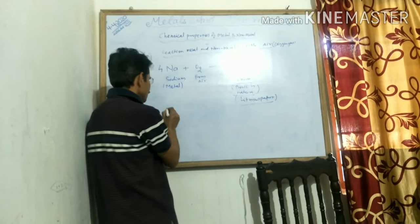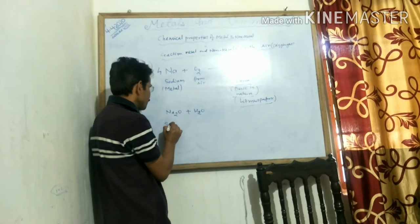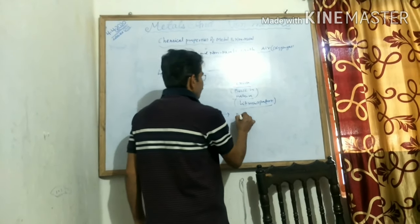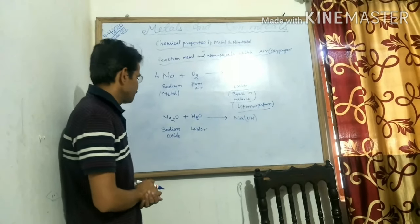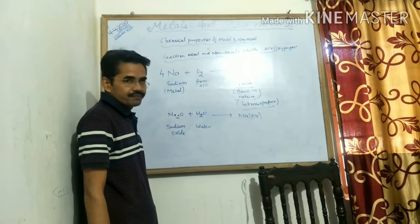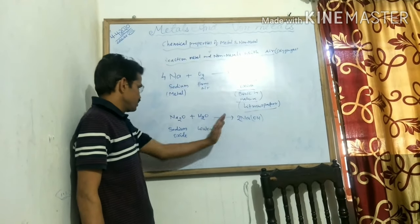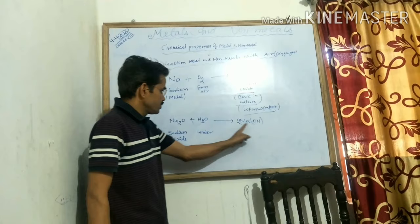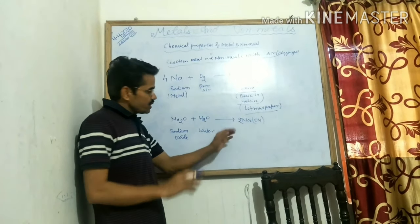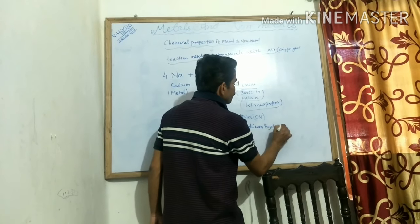When sodium oxide (Na₂O) dissolves in water, it forms NaOH — sodium hydroxide. The equation needs to be balanced: there are 2 sodium atoms and 2 hydrogen atoms, so we put 2 in front of NaOH. Checking: 2 oxygen, 2 oxygen; 2 sodium, 2 sodium; 2 hydrogen, 2 hydrogen. The equation is balanced. This compound is known as sodium hydroxide.